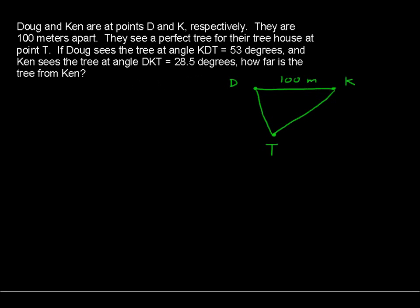We're told that the angle KDT is 53 degrees. KDT, that's this angle right here, 53 degrees. So I'll put that in there because drawing a diagram really helps us to understand what's going on. We also have angle DKT is 28.5 degrees. So DKT, this angle here, is 28.5 degrees. And remember when we're doing this, we're talking about degrees here, not radians. So make sure that your calculator is in degrees mode.